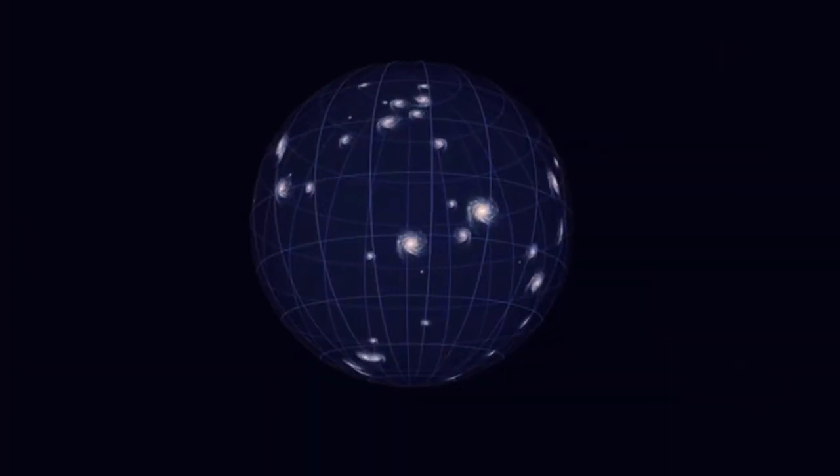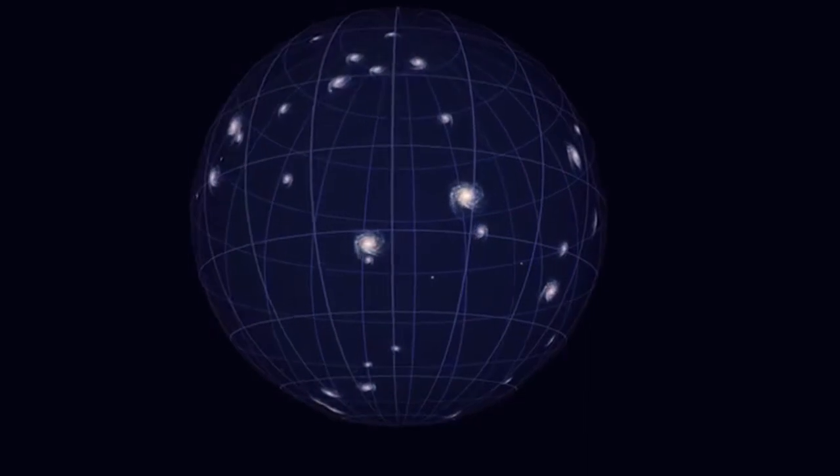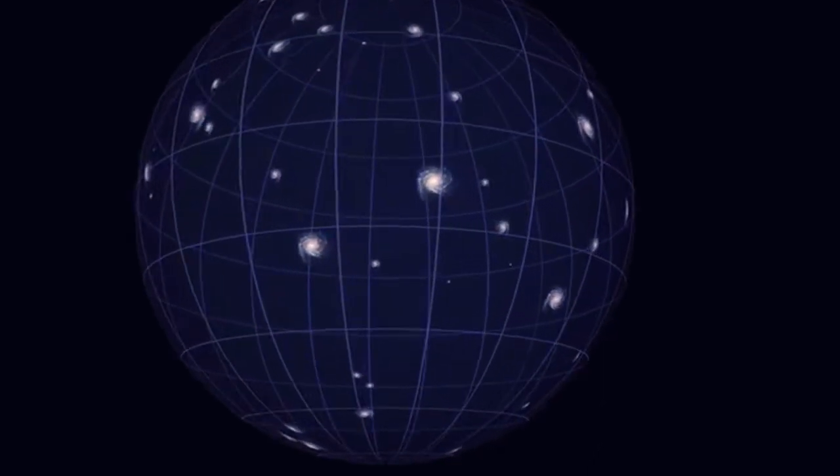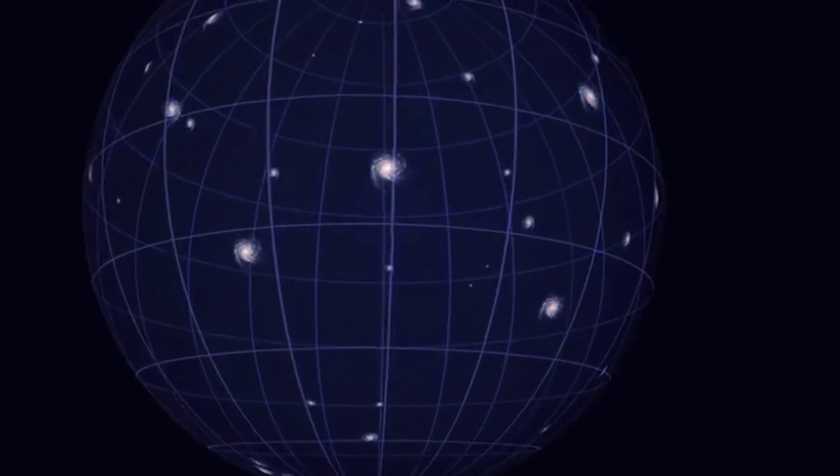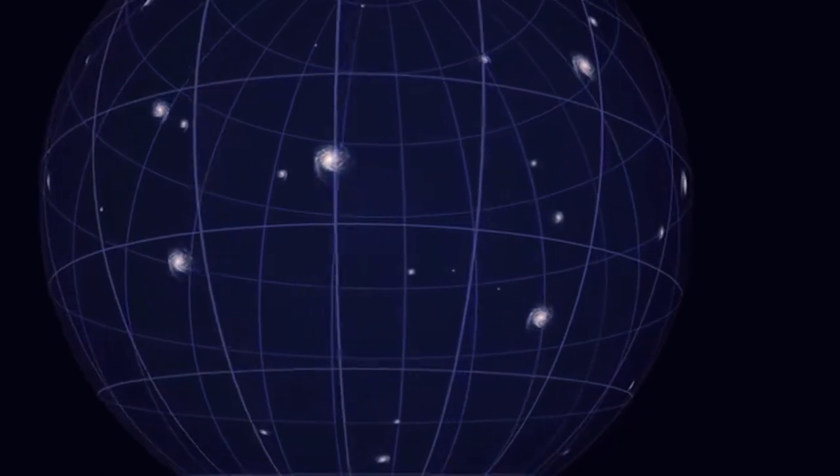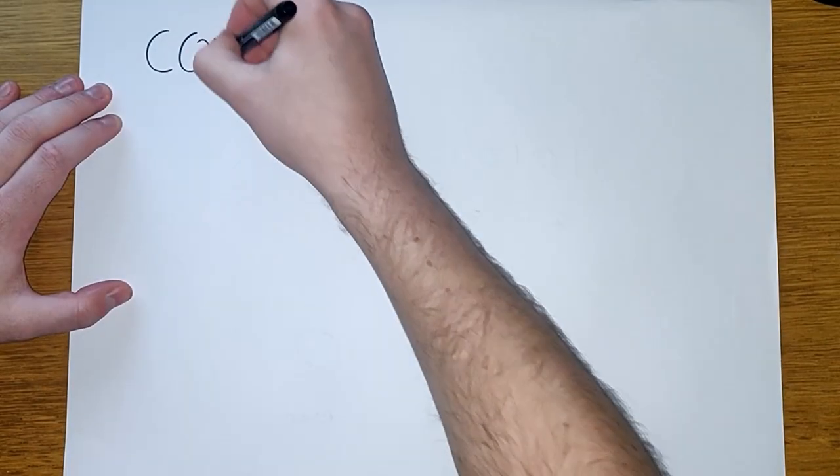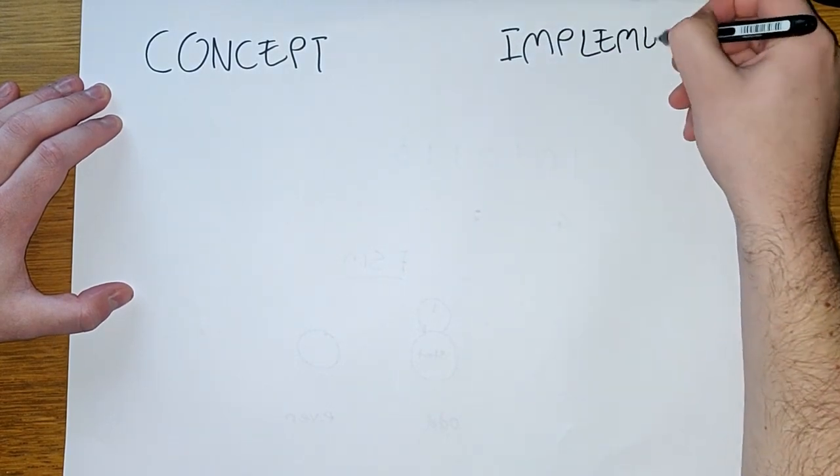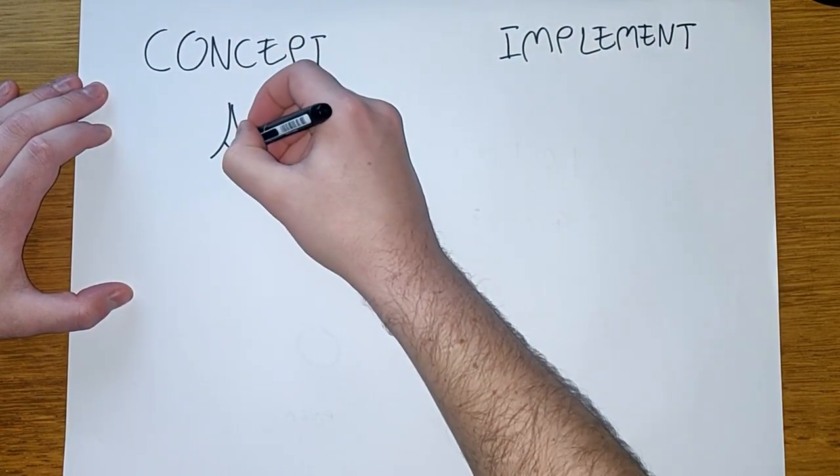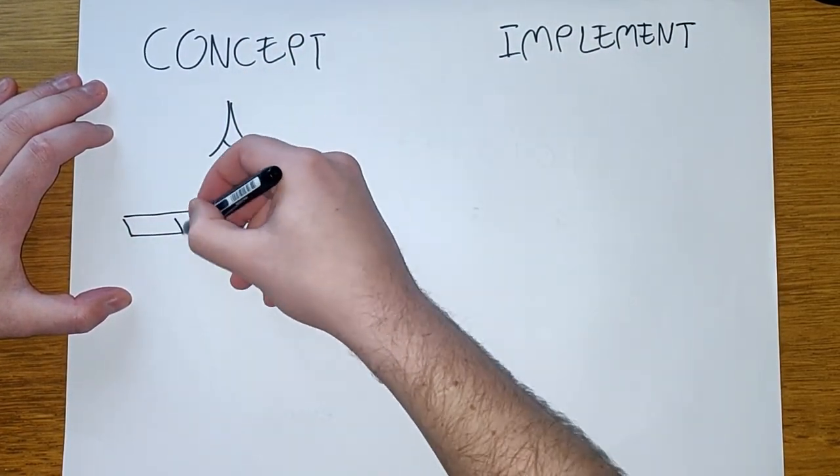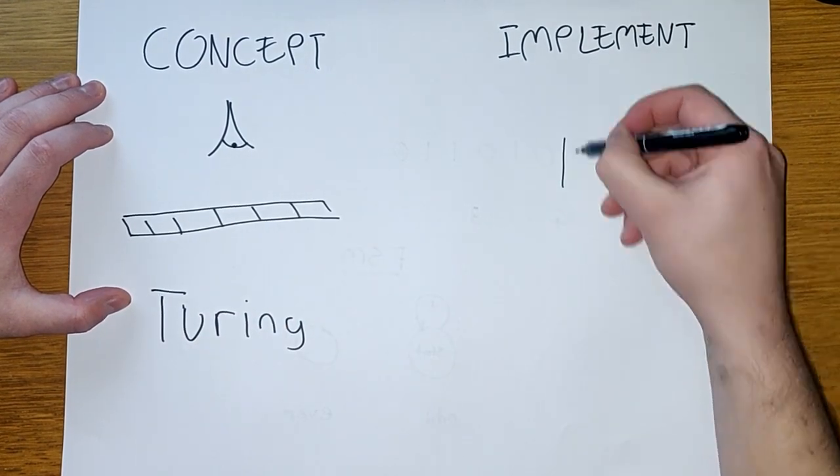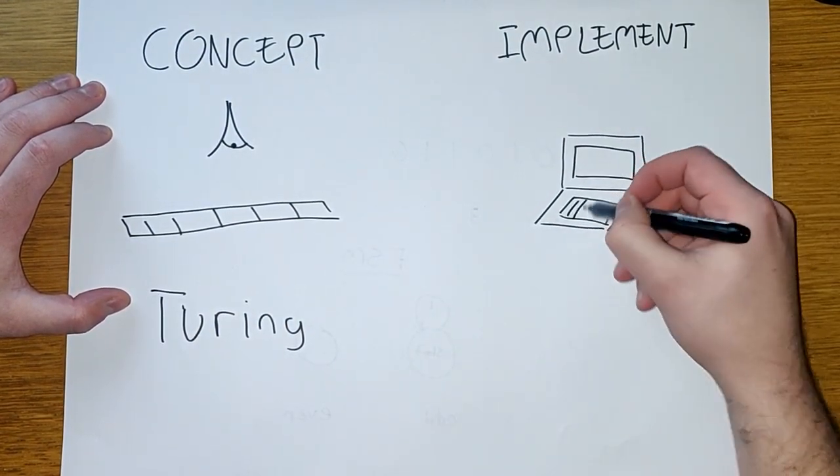Under our current understanding of the universe, Turing machines are the absolute limit of computability power. There isn't another machine we can design to solve more problems, at least theoretically. So if Turing machines are concepts, but we can build implementations of them, an excellent question to ask is, how do we know what we've built is the equivalent of a Turing machine?